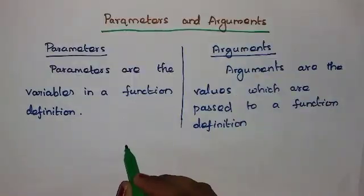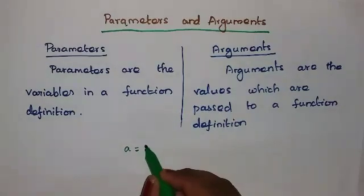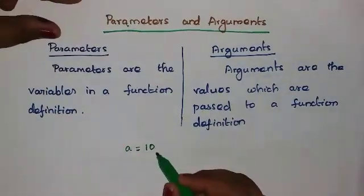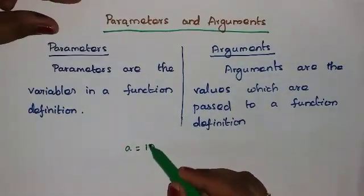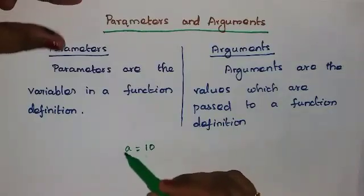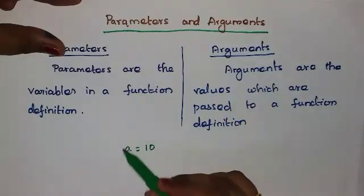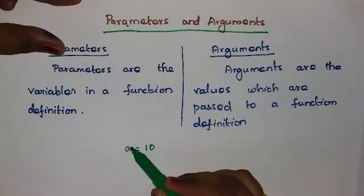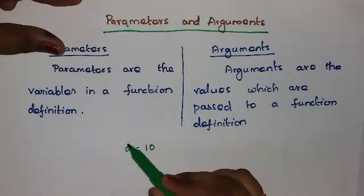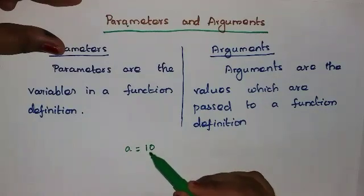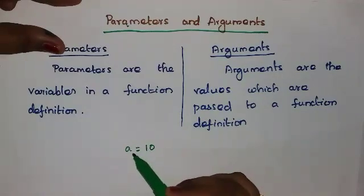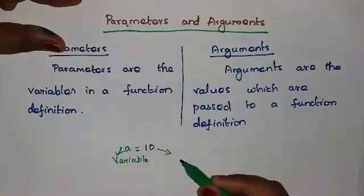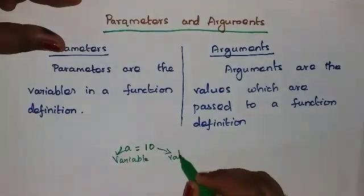We will see one example. A is equal to 10. What does it mean? The value 10 is stored in the variable A. So, what is the variable? The variable is a memory area — it is used to store or hold the values. Here, A is called a variable and 10 is the value.